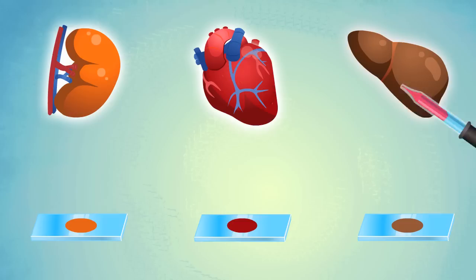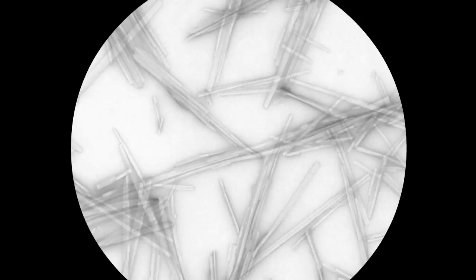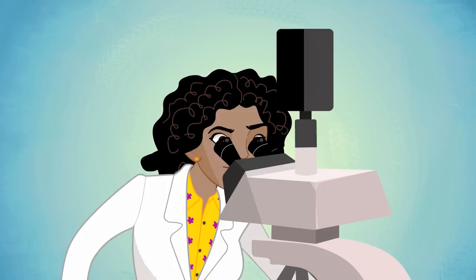If amyloid is present, the use of Congo red staining will yield a definitive diagnosis in nearly 100% of cases. Viewing the tissue sample with an electron microscope will also show the classic structure of amyloid fibrils, thus confirming its presence.